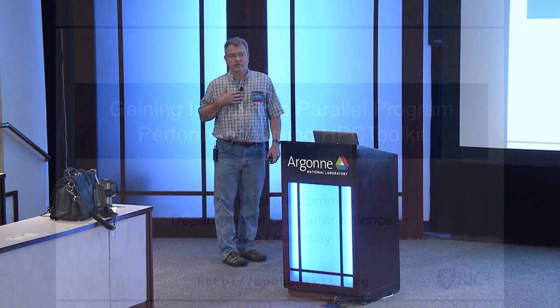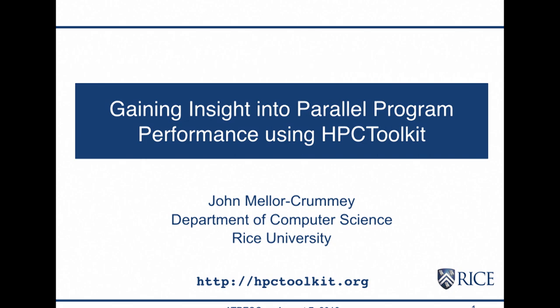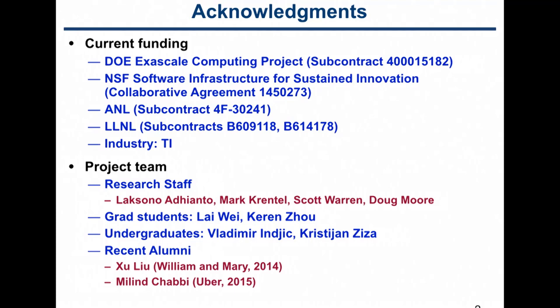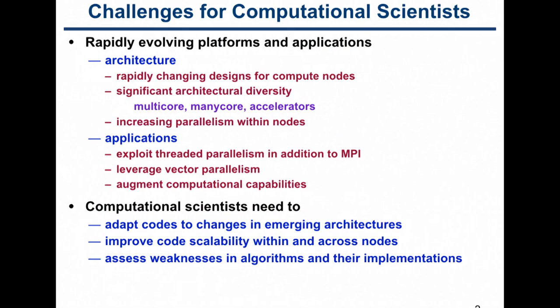Hi, I'm John Miller-Grumme. I'm a professor at Rice University in the computer science department. My focus area is high performance computing, and the thing my group is working on mostly these days is building this tool that I'm going to talk about — HPCToolkit. We're supported mostly by the DOE Exascale Computing Project, with some funding from NSF, a subcontract from Argonne, and one from Livermore. This is the work of my research group, which includes four PhD research staff and a number of students.